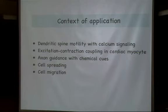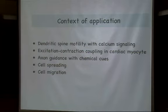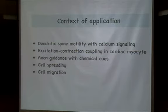Also, in the neural system, information output is through chemical cuing as a driving force of axon guidance. The present framework could be considered for that application as well. Cell spreading and cell migration is another kind of example we could consider.